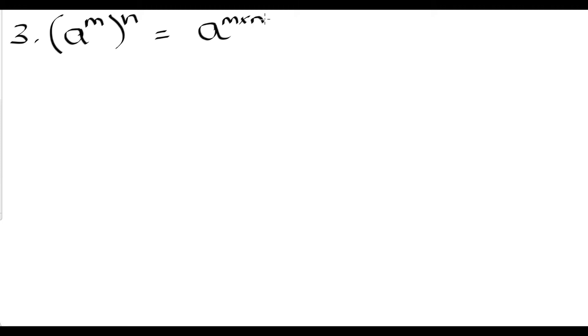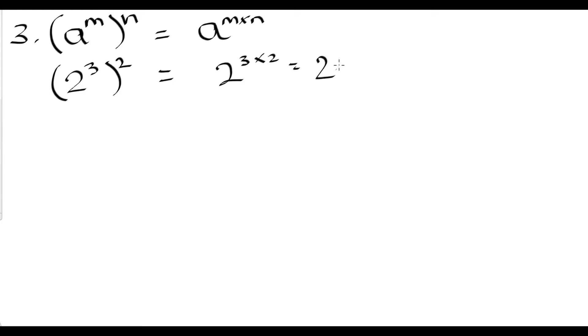The third exponent law is when we have a base a raised to a power, and that whole thing is raised to another power. This law states that we can write down our common base and multiply the exponents. For example, 2 to the third power all raised to the second power equals 2 to the power of 3 times 2, which is 2 to the power of 6. When we're raising a power to another power, we multiply our exponents.